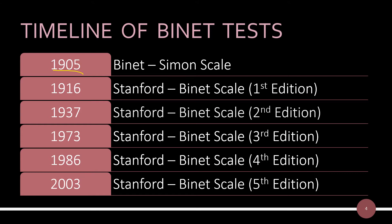In the year 1912, William Stern gave the concept of the intelligence quotient. The concept of mental age was given by Binet. In the year 1916 came the first edition of the Binet-Simon scale, and the second edition came in the year 1937.